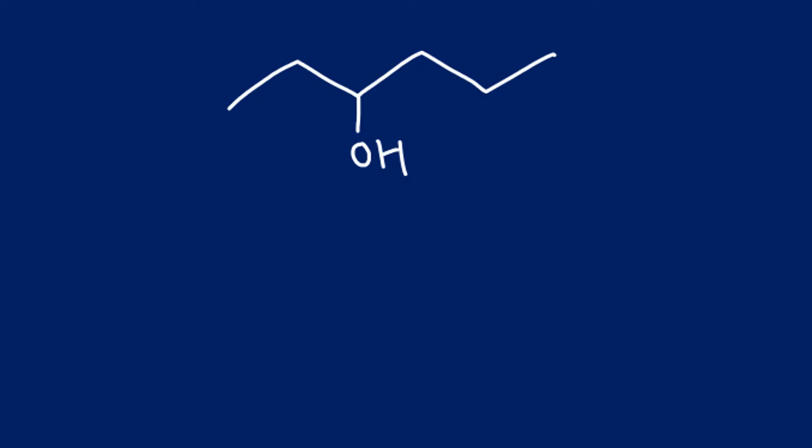This carbon chain is one, two, three, four, five, six. Don't forget I can number it in reverse as well: one, two, three, four, five, six. Lowest number being three for the alcohol group, so this is hexan-3-ol. There are no other side chains.